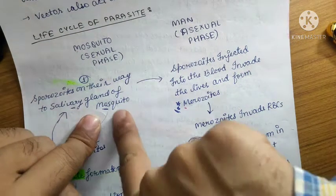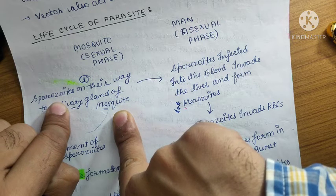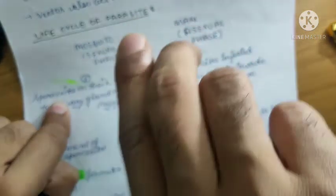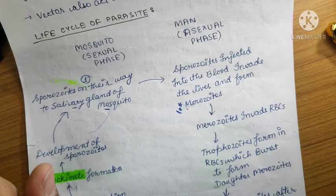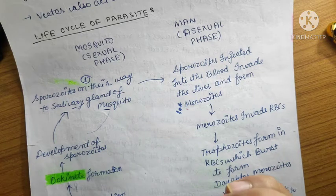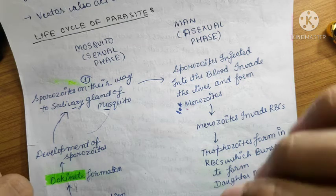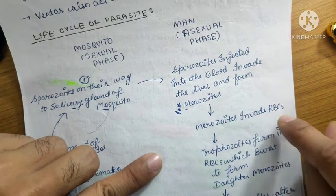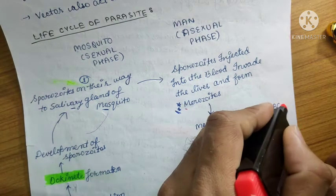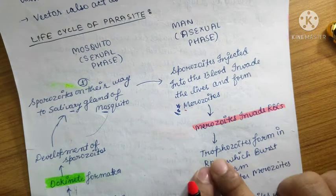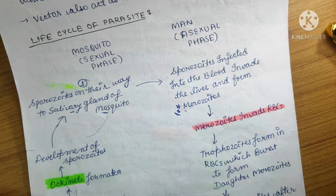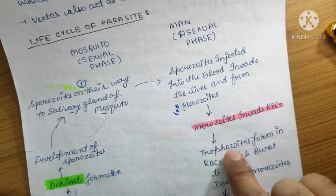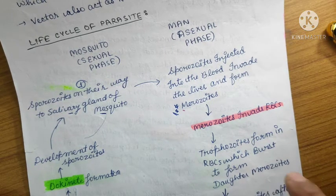The sporozoites in the salivary gland of the mosquito are injected into the liver, where they are converted into merozoites. These merozoites then invade the RBCs. The invasion and rupturing of RBCs is very important. Trophozoites form inside the RBC, and then merozoites are converted from the trophozoites.